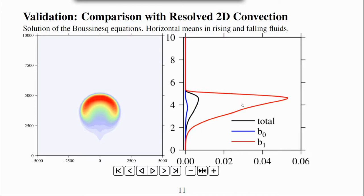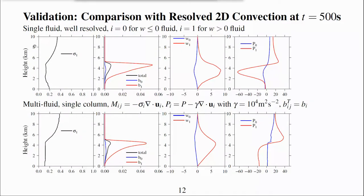It is these horizontal means that we are aiming to reproduce with a two-fluid single-column model. The top row shows the horizontal mean of rising and falling fluids for the single-fluid well-resolved bubble after 500 seconds. The bottom row shows the same variables for the two-fluid single-column model with dynamic entrainment between fluids, pressure for each fluid controlled by divergence with the constant of proportionality γ set according to scale analysis and the buoyancy of the fluid transferred equal to the buoyancy of the fluid that it is leaving.